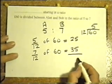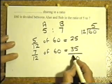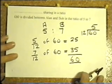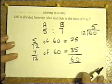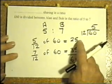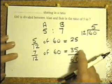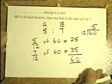You can add those two values together and you've got your £60. So in other words in that share out of a ratio of 5 to 12, Alan gets £25 and Bob gets £35.